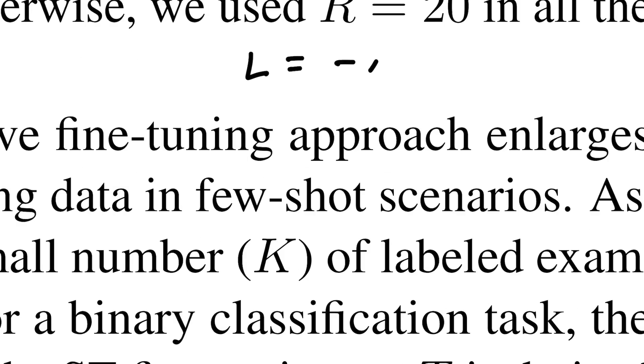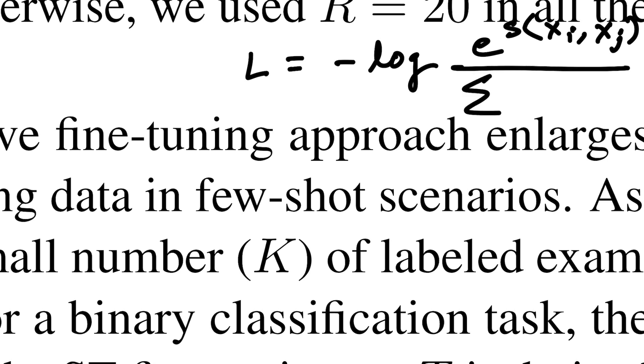The contrastive loss is defined as minus log e to the power similarity between any two samples from positive class. If it's xi and xj both from the same class, divide by summation across your batch size. You iterate over that, and then e to the power similarity between xi and xk, where k iterates over the other class.